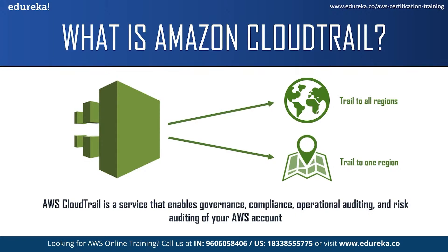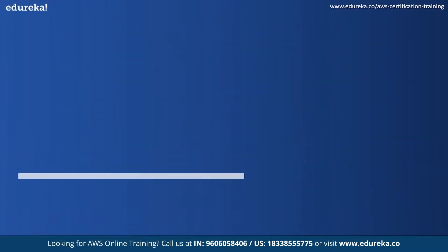It is best practice to create a trail in all regions. The next type is a trail that applies to only one region. When you create a trail that applies to one region, CloudTrail records events in that region only and delivers the CloudTrail event log files to an Amazon S3 bucket that you specify. You can only create a single-region trail using the AWS Command Line Interface. If you create additional single-region trails, you can have those trails deliver log files to the same Amazon S3 bucket or to a separate bucket.